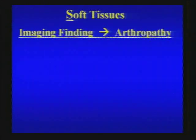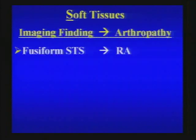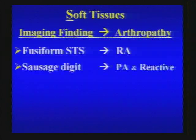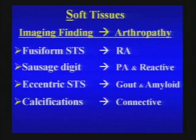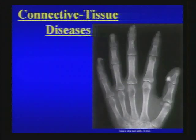Looking at soft tissues can help narrow the diagnosis. Fusiform soft tissue swelling around a joint is characteristic of many inflammatory arthropathies like RA. Diffuse soft tissue swelling involving an entire digit — sausage digit — is characteristic of psoriatic and reactive arthropathy. Eccentric soft tissue swelling is characteristic of a gouty tophus or amyloid. But calcifications are particularly characteristic of connective tissue diseases.